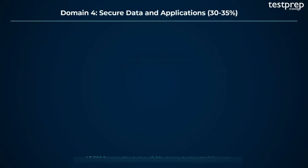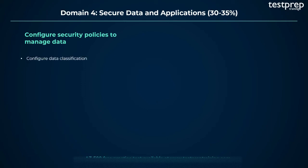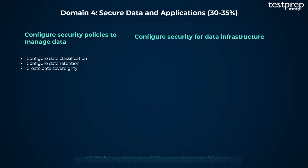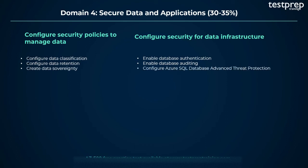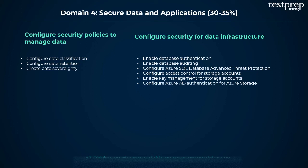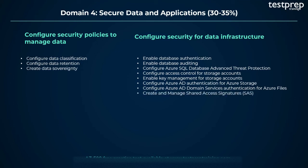Fourth, secure data and applications. Number 1: Configure security policies to manage data. It contains three subtopics: configure data classification; configure data retention; and create data sovereignty. Number 2: Configure security for data infrastructure. It contains 11 subtopics: enable database authentication; enable database auditing; configure Azure SQL Database Advanced Threat Protection; configure access control for storage accounts; enable key management for storage accounts; configure Azure AD authentication for Azure Storage; configure Azure AD Domain Services Authentication for Azure Files; create and manage shared access signatures; configure security for HDInsight; create security for Cosmos DB; and configure security for Azure Data Lake.